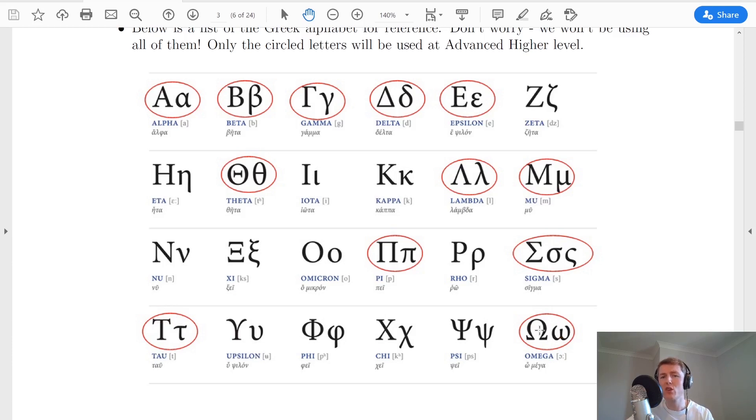Now the only two new ones that I want to introduce you to in the Advanced Higher Physics course are epsilon or epsilon, however you want to say it, which is used for a constant, so the permittivity of free space is epsilon 0, and for sigma we use this symbol here to be the Stefan-Boltzmann constant.